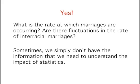Yes. A major flaw is that we don't have the information that we need. What is the rate at which marriages are occurring? Suppose only 1% of marriages 25 years ago were interracial, and so now 1.75% of marriages are interracial — 1.75 is 75% higher than 1. But this latter number is hardly evidence suggesting the acceptability of interracial marriages. In addition, the statistic provided does not rule out the possibility that the number of interracial marriages has seen dramatic fluctuations over the years, and this year is not the highest. There is simply not enough information to fully understand the impact of the statistics.